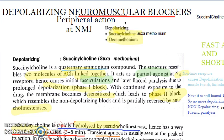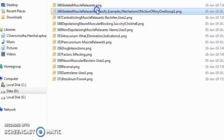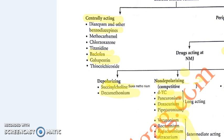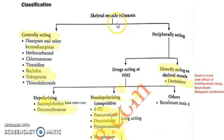We are talking about muscle relaxants — skeletal muscle specifically. We are looking at the peripheral ones. Let me give you a brief introduction. You can see the classification here. We are talking about skeletal muscle relaxants, and in that you have the centrally acting and the peripherally acting.